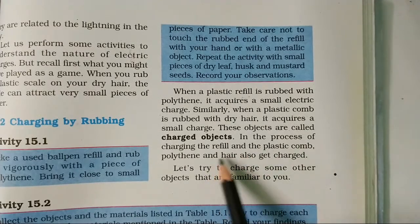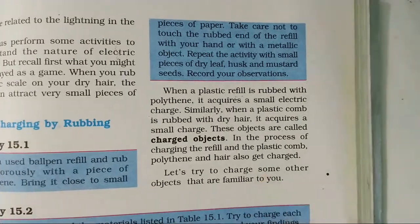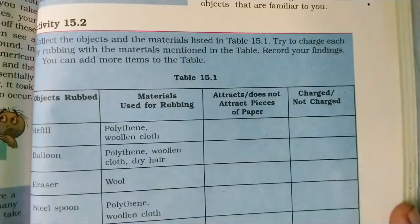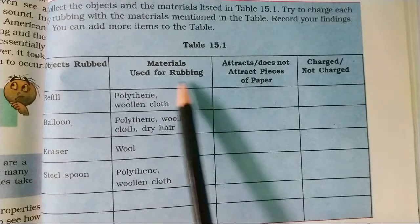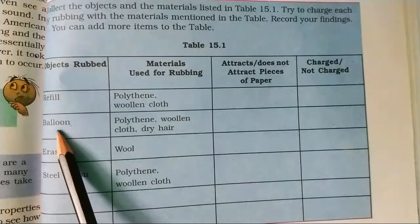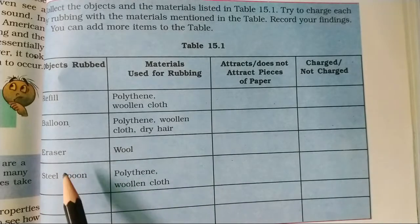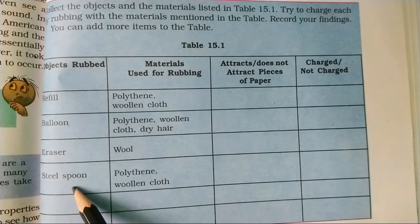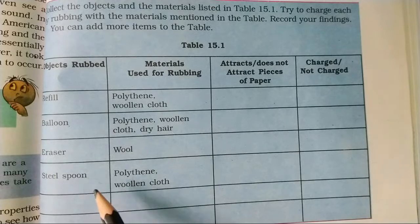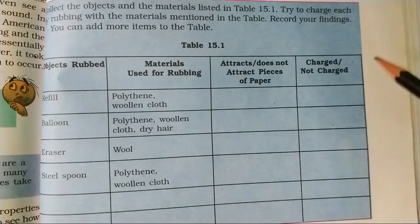During charging, the refill and the plastic comb also get charged and they show a property. Materials mentioned here include a plastic refill rubbed with polythene or hair, and an eraser rubbed on wool. In common life, if you rub a plastic scale on your hair, it gets charged and starts attracting paper.